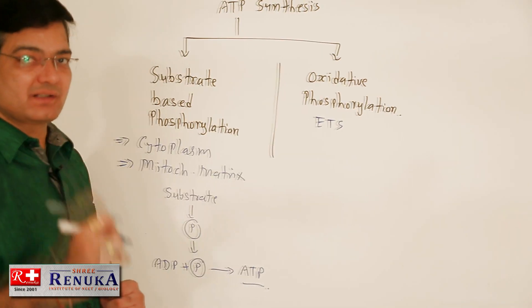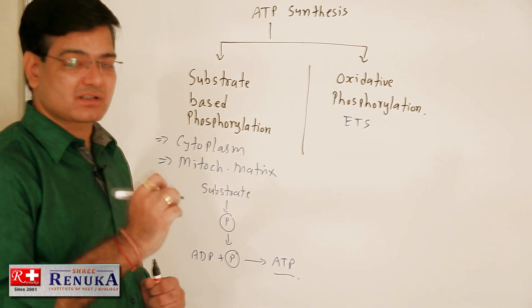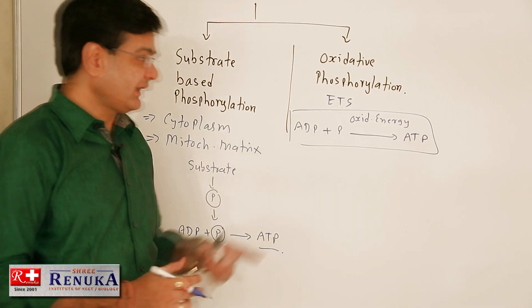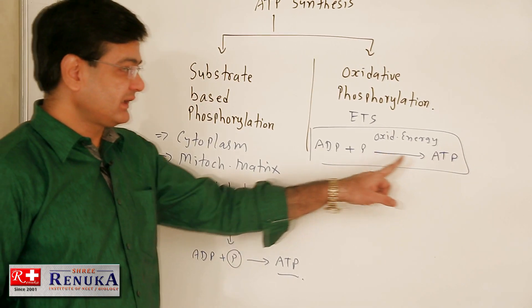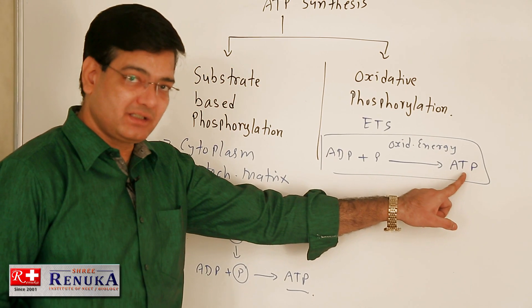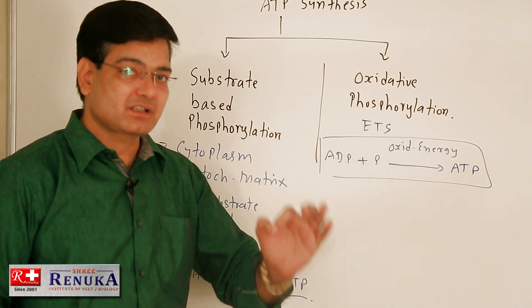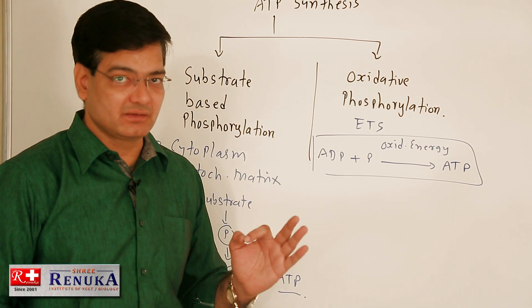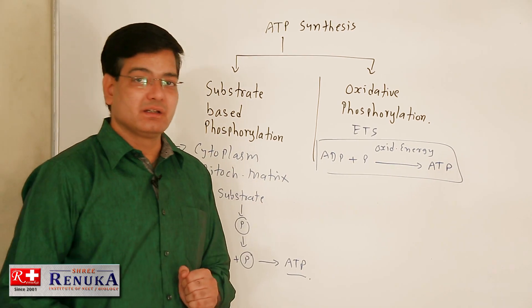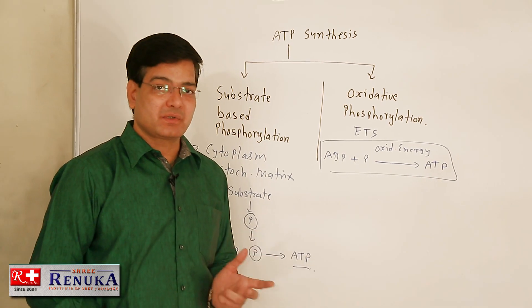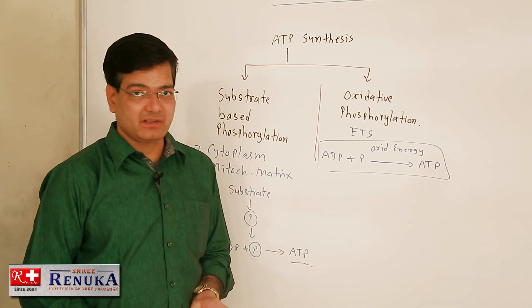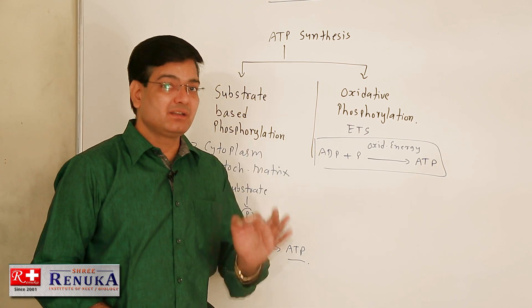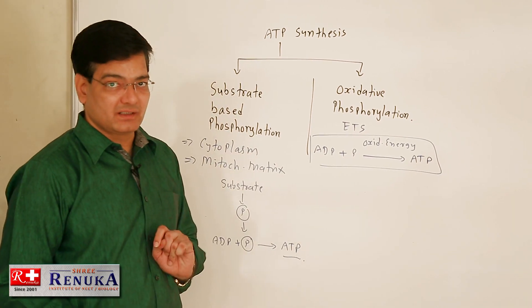Oxidative phosphorylation is also called the electron transport system. With the help of oxidation energy, ADP is phosphorylated to form ATP, and that is why it is called oxidative phosphorylation. The process occurs in the cristae membrane of mitochondria, but ATP synthesis occurs in the matrix of mitochondria.